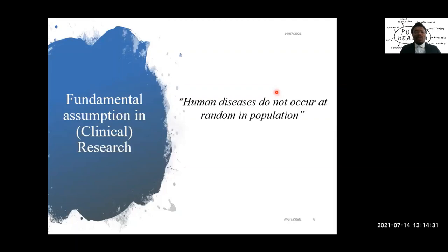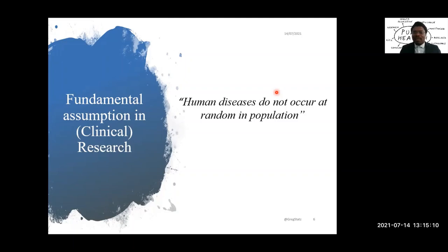Before we go deeper into that, I want us to step back and understand the fundamental assumptions in research — what is driving us, what is the background before we carry out research. The fundamental assumption each time we carry out research is simply that human diseases do not occur at random in the population. There is a pattern, and if we are able to identify that pattern, we can predict the variability and gain control of the various structures existing in that population with respect to that disease.